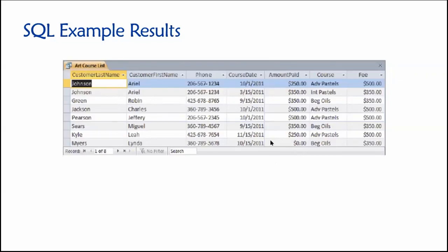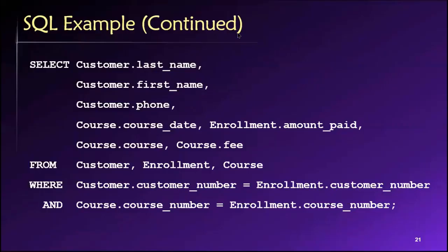So in this case, we're generating some sort of report. And you'll note here that the output, the customer's last name, first name, phone number, course date, amount paid, name of the course, and the fee, total course fee. That corresponds directly to the order in which we requested that information out of the database.